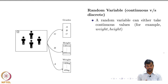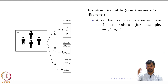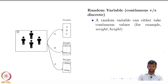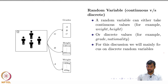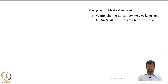A random variable can either be continuous or discrete. Discrete is the example of grades where you have grades A, B, C, D, and so on. A continuous random variable is something like height or weight, which can take on any real value. For the rest of this course we will be focusing only on discrete random variables unless otherwise mentioned.